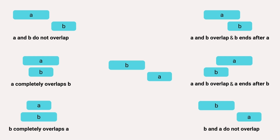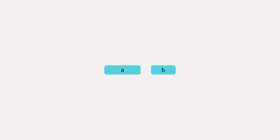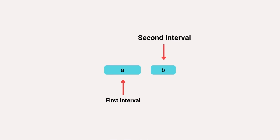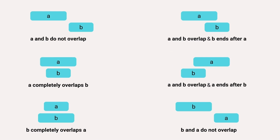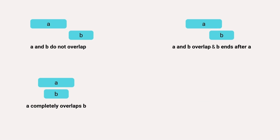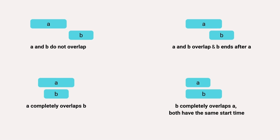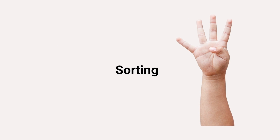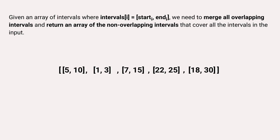B and A do not overlap — those are six outcomes when we compare two intervals. However, if we sort the array by start times, the first interval will always be A and the second always B, so A's start time is always less than or equal to B's. As a result, all cases where B starts first are eliminated. We are left with three possibilities where A starts first, plus a new one where both intervals have the same start time. Sorting by start time reduces our six possibilities to four.